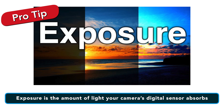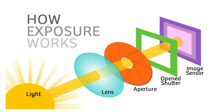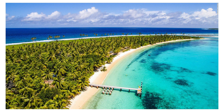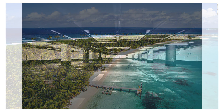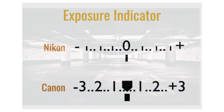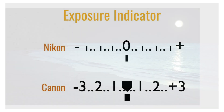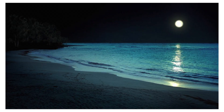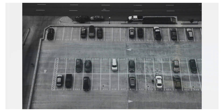Simply put, exposure is the amount of light your camera's digital sensor absorbs. Sometimes you want this to be a lot of light and sometimes very little. For instance, you want lots of light on a beach scene at noon but not very much light in a spooky parking garage at midnight. If you get the exposure wrong, your beach scene will look like you're seeing it through a welder's mask, while your parking garage won't be spooky at all because it'll look like you shot it in the middle of the day.